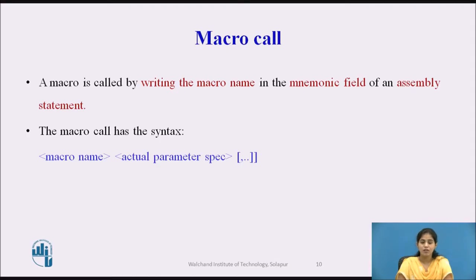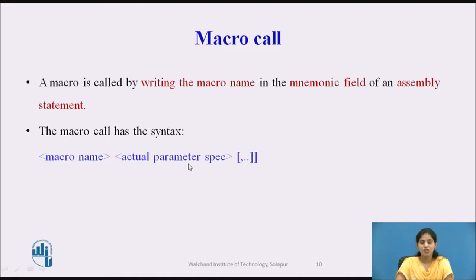Now, after defining the macro, we need to call it. A macro is called by writing the macro name in the mnemonics field of an assembly statement. The syntax for calling the macro is: first mention the macro name, then mention the actual parameter specification.